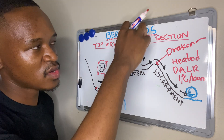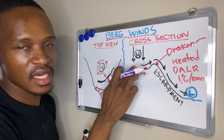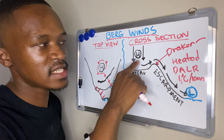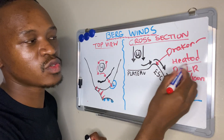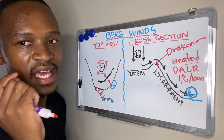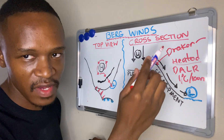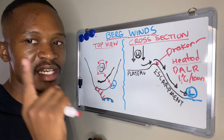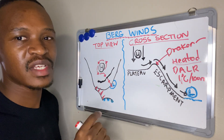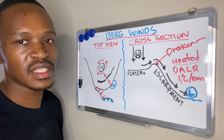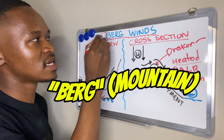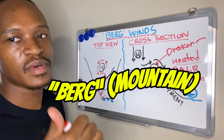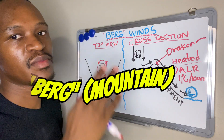This wind that sank on the interior was cold and dry since it is winter, but as it descends the escarpment it is heated at a dry adiabatic lapse rate of one degree Celsius every 100 meters. By the time it reaches the coast it becomes hot dry winds known as berg winds — the word 'berg' being the Afrikaans word for mountain.